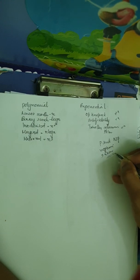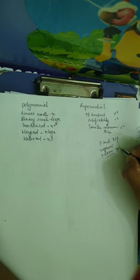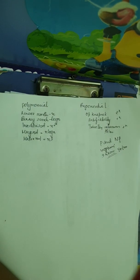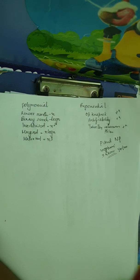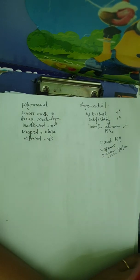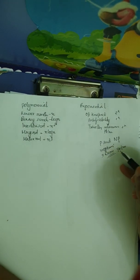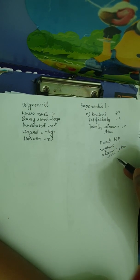The second one is the decision problem. A decision problem has either a yes answer or a no answer. For example, whether a given graph can be colored by only four colors — you need to answer either yes or no. These are the two types of problems: optimization problems and decision problems.